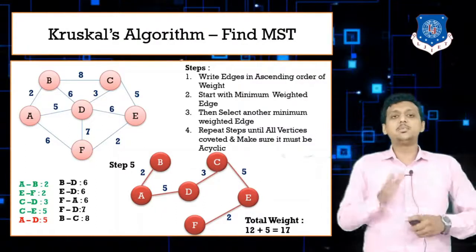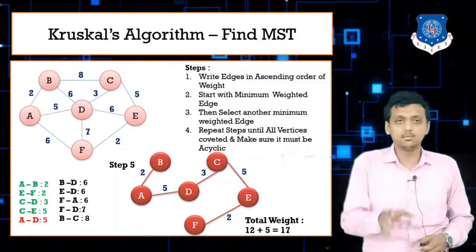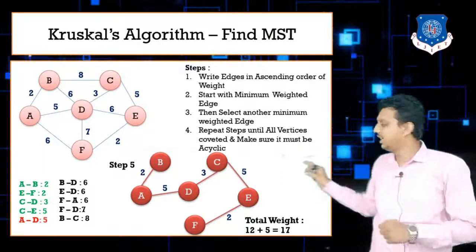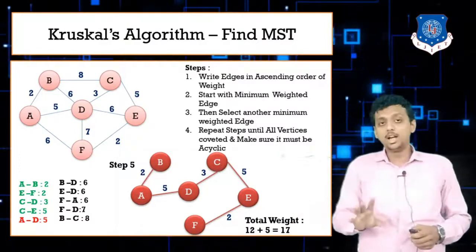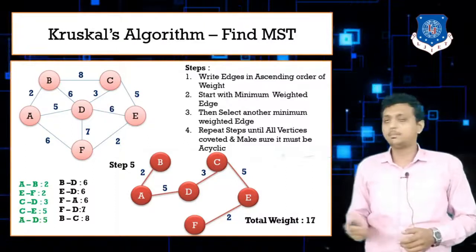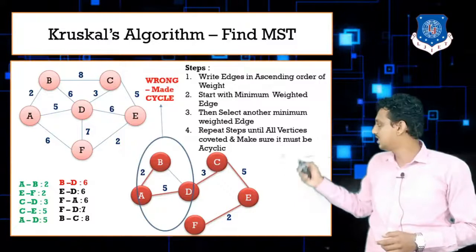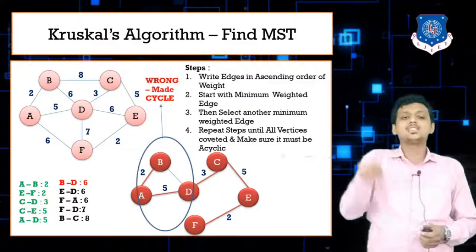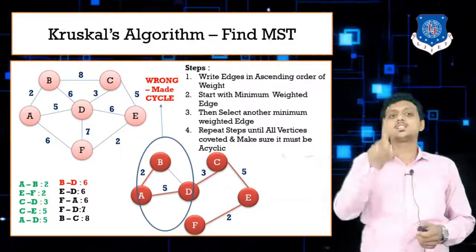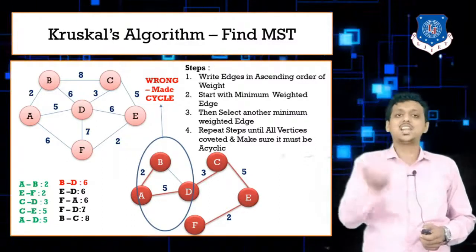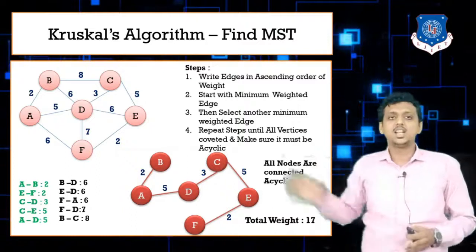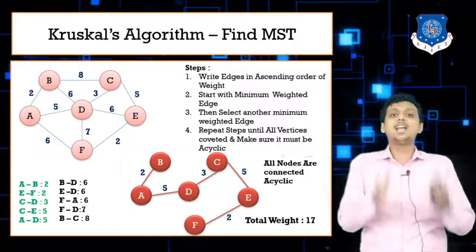The total weight of 17 is the same as Prim's algorithm here, but that's not always the case — the answers can differ. If you try to take the next edge BD, you will see it forms a cycle: A-B-D. So BD must be ignored. Since all nodes A, B, C, D, E, and F are already connected with minimum edges, our answer is 17.